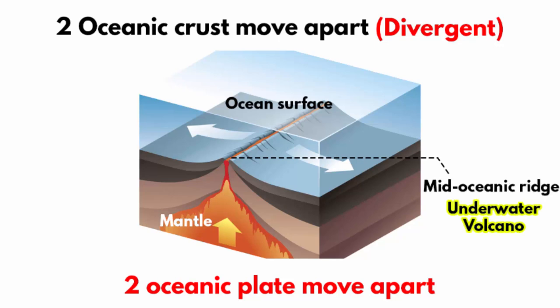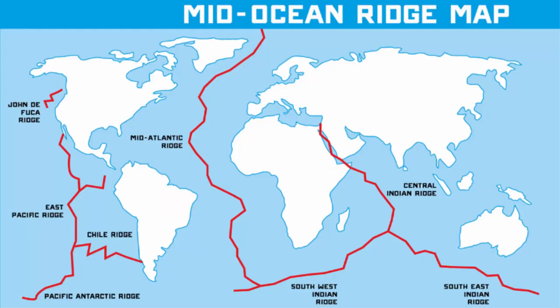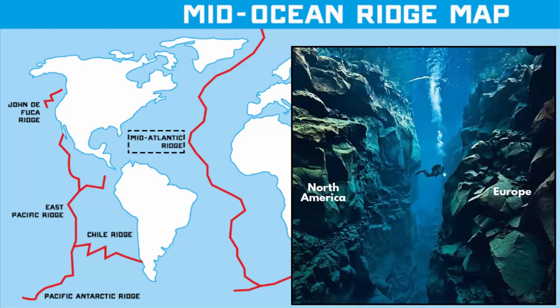When magma comes out, it forms an underwater volcano, also called a submarine volcano. The most famous example is the mid-oceanic ridge of the Atlantic Ocean, which divides the Eurasian plate and the North American plate.